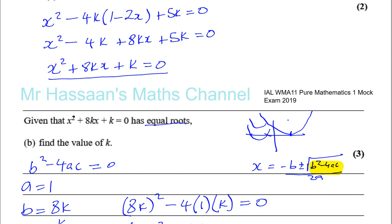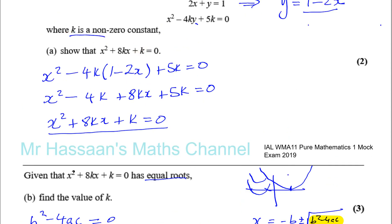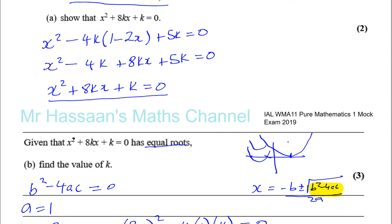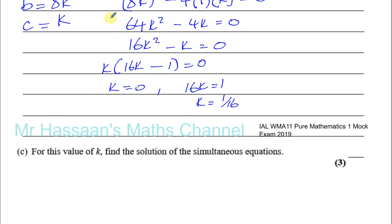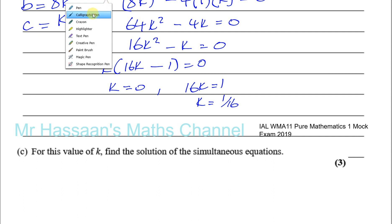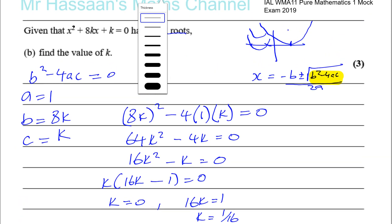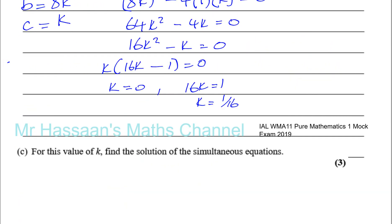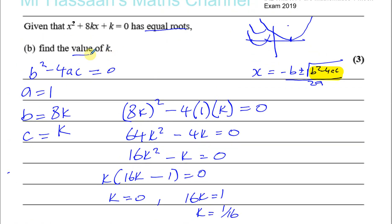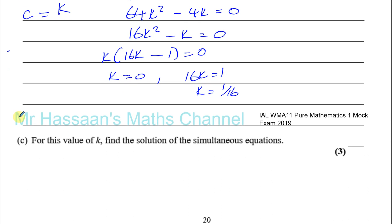Now k equals 0 is not acceptable, because the question tells us k is a non-zero constant. You have to read all the words of the question carefully. The question says 'find the value of k' — singular — so if you write two values it will be wrong. Since k can't be 0, therefore k equals 1 over 16 is your solution.